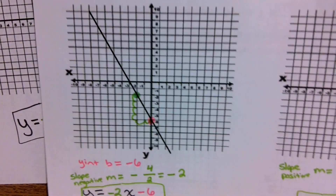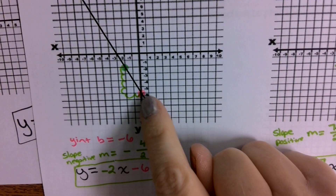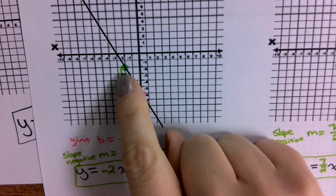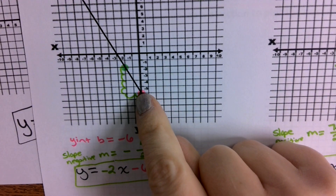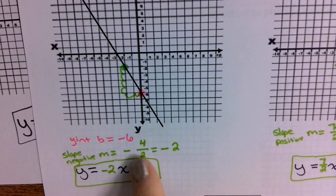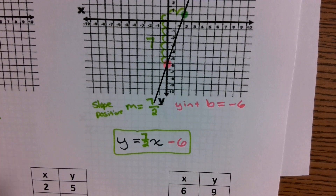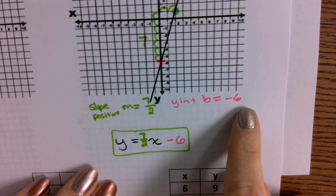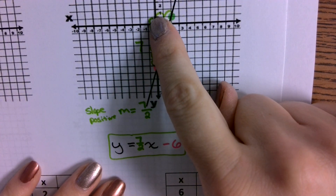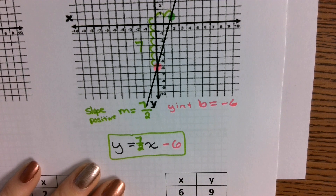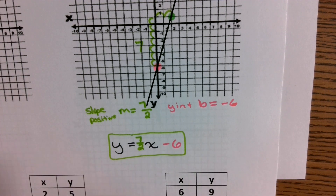For the second example, your y-intercept was at negative 6, and the slope: you can go down 2 and to the right 1, or I found a point going up 4 to the left 2. That's 4 over 2 with a negative slope, which simplifies to negative 2. So we have y = -2x - 6. For your last example, you also had the y-intercept at negative 6, and the slope goes up 7 to the right 2. So the equation is y = 7/2 x - 6.